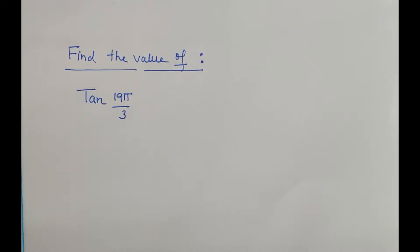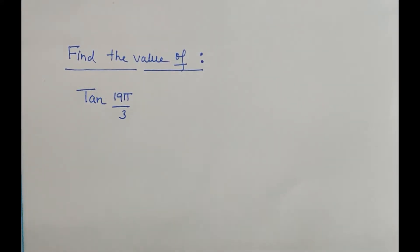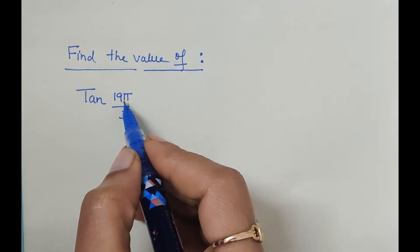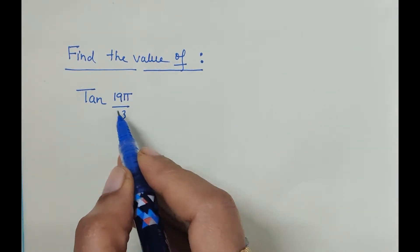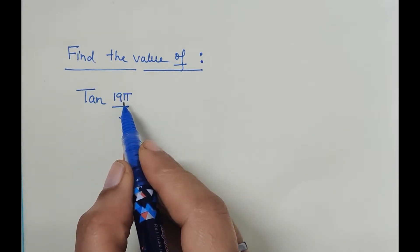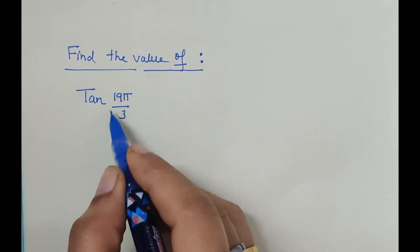Let's solve a few more questions on trigonometric functions: tan 19π by 3. What we have to do is see if the numerator is greater in value than denominator and divide. 3 times 18 is the nearest multiple of the numerator, so we can break down this angle.